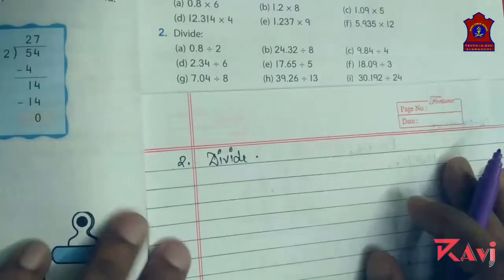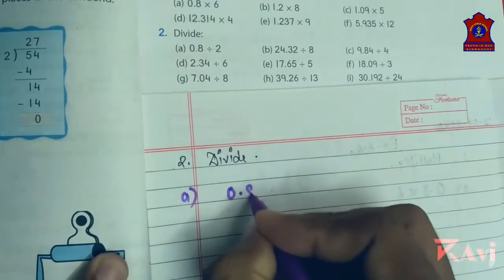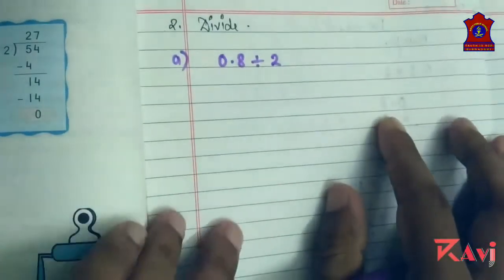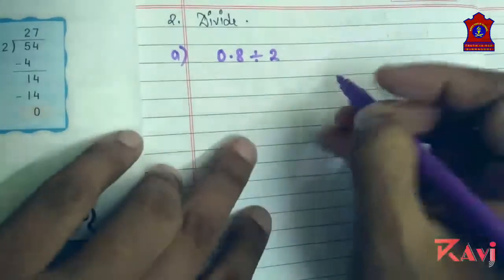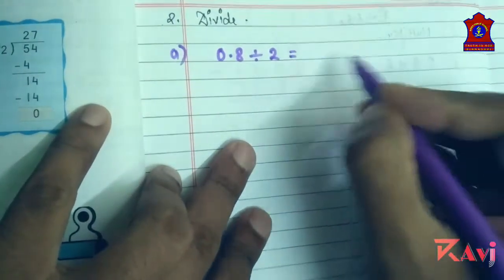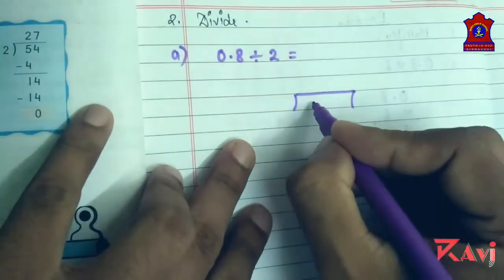Let's do question number a first. Zero point eight divided by two. It's simple, use the same method that you have learned. So you just keep a space to write the answer here and create a division box: zero point eight and two.